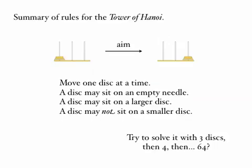Here's a summary of the rules. You want to get all the discs from the leftmost needle to the rightmost needle, moving one disc at a time, where a disc may sit on an empty needle or it may sit on a larger disc. A disc may not sit on a smaller disc.